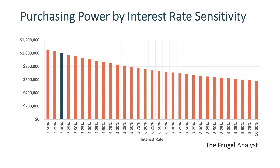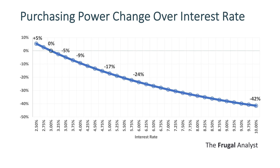Plotting the purchasing power percentage change over interest rate, we can see starting with 3% interest rate we are at 0%, our baseline purchasing power. When interest rate decreases, we have a gain in purchasing power, and when interest rate increases, we have a loss. At an extreme scenario at 10% interest rate, purchasing power dropped by over 40% relatively. So overall, interest rates make a real tangible impact in the amount of loan that the buyer can afford.